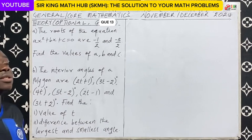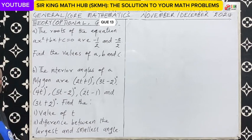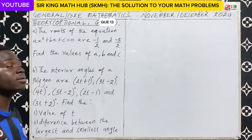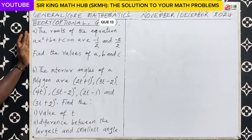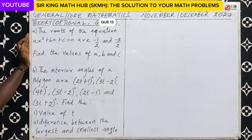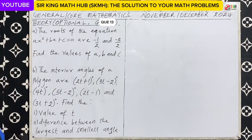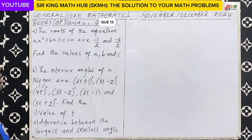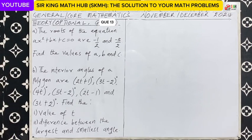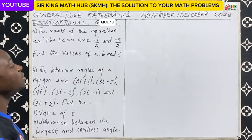This is November-December 2024. Starting with the A part: the roots of the equation ax squared plus bx plus c equals 0 are negative 1/2 and negative 3/2. You have to find the values of a, b, and c.